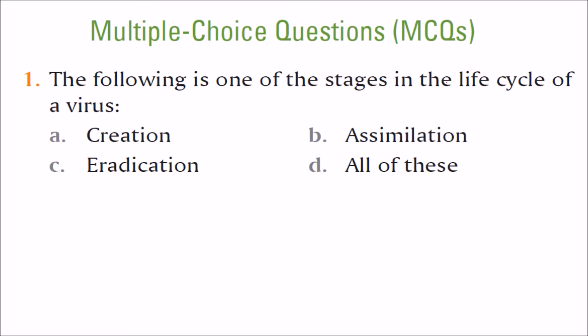The following is one of the stages in the life cycle of a virus. A virus is created, then it is assimilated, then eradication is done. All of these is the correct answer — D.